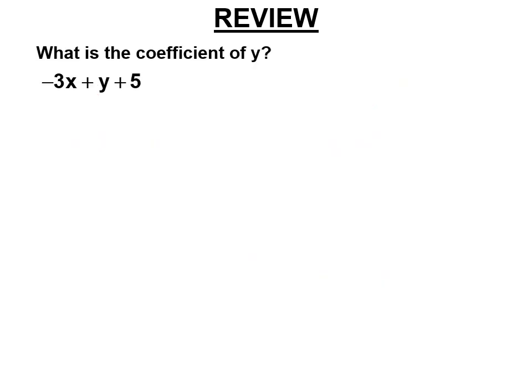What is the coefficient of y? The coefficient of x is negative 3. It's the number multiplying x. So the coefficient of y is 1, right? Because there's 1 there. 5 is not a coefficient because it's not multiplying a variable, right? The number multiplying the variable is called a coefficient.